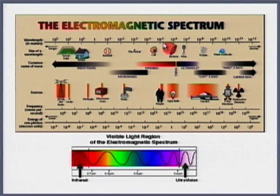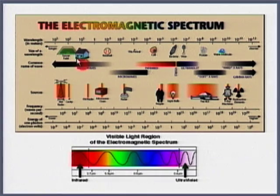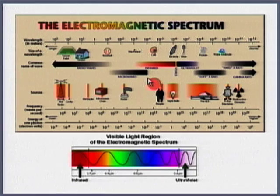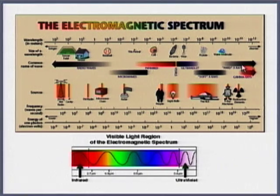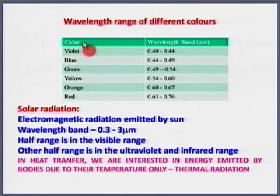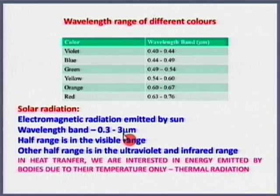Red light has a larger wavelength than green, which is why red is used for stop signals — it can be seen from farther away. This illustrates how wavelength concepts from the electromagnetic spectrum have practical applications. In heat transfer, thermal radiation refers to energy emitted by bodies due to their temperature, covering the infrared, visible, and some ultraviolet range.